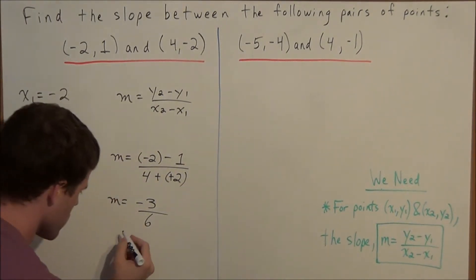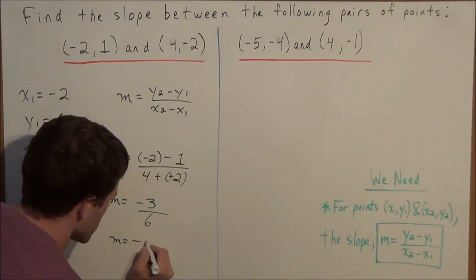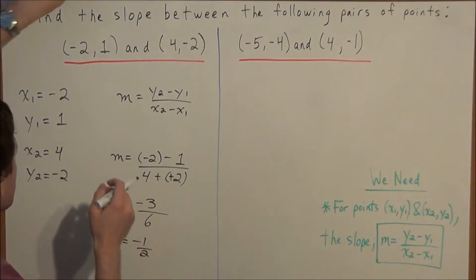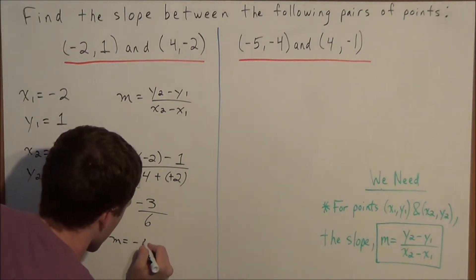So now this fraction will reduce. We have negative three over six, this will reduce to negative one-half. So the slope between these two points, negative two one and four negative two, is negative one-half.